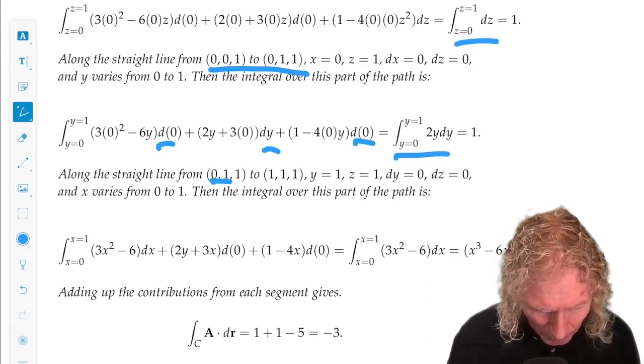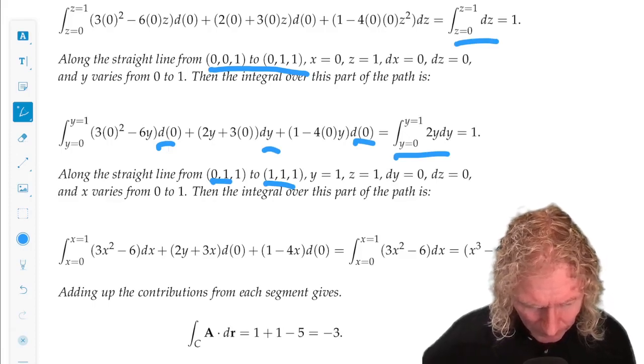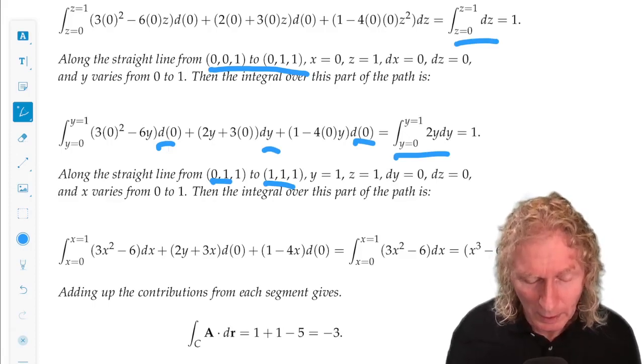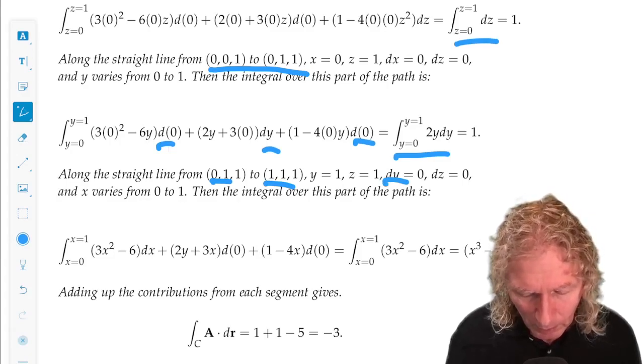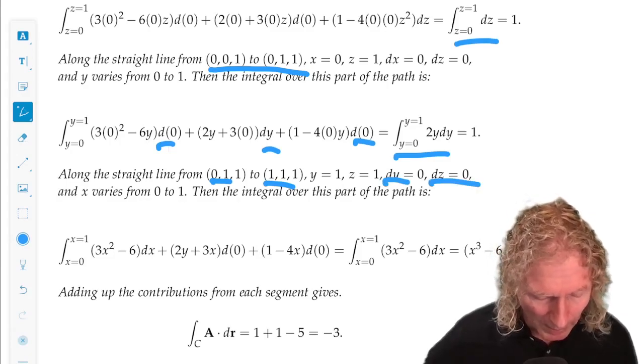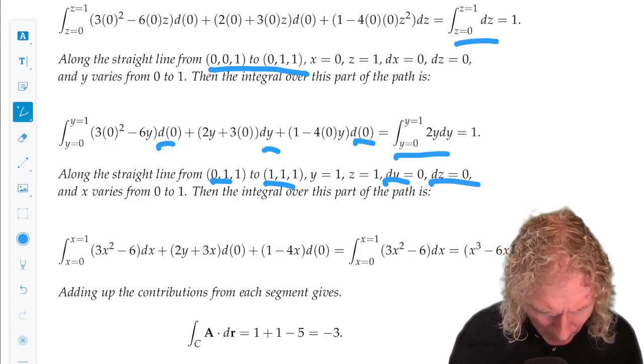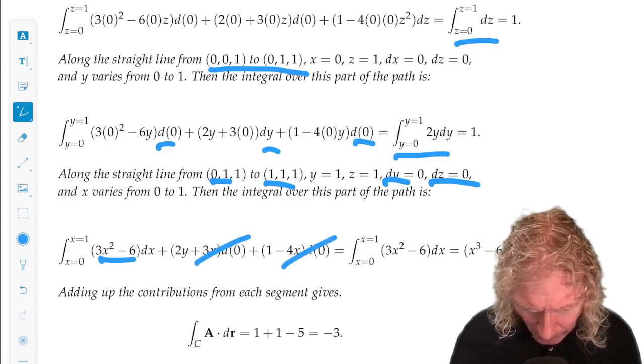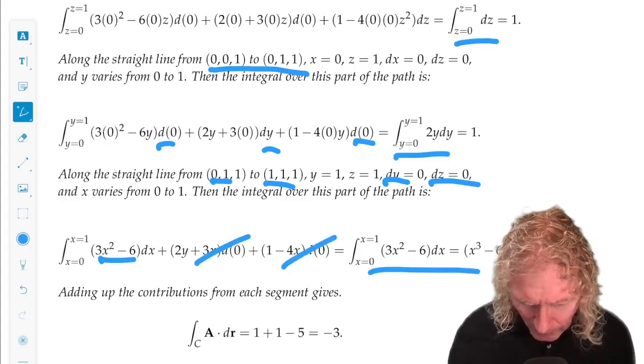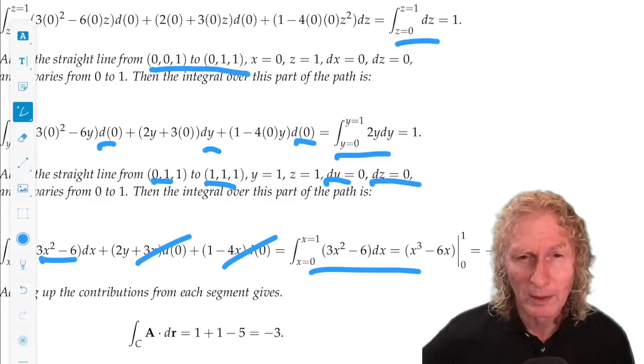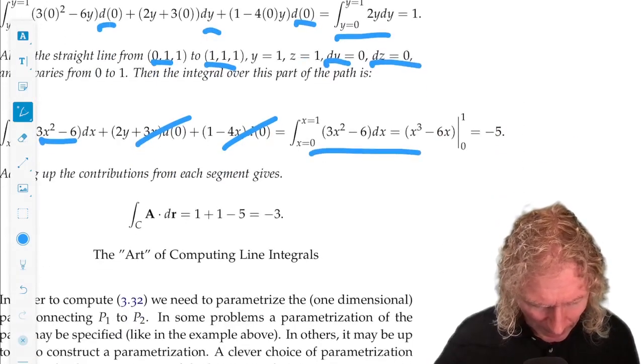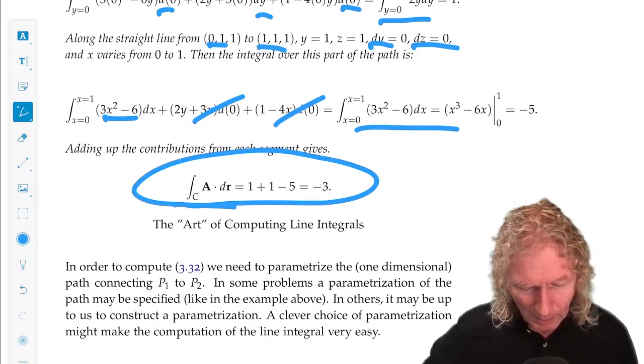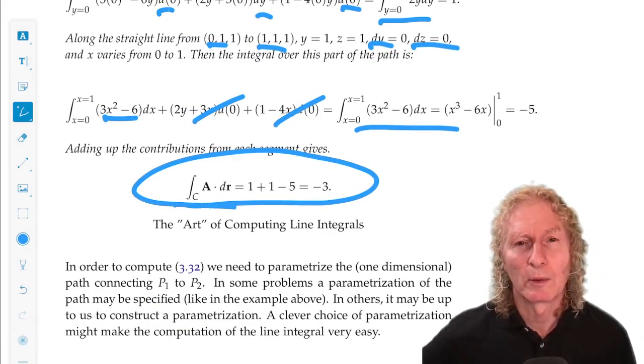dy is the only thing that's non-zero. And we have this left. And then finally, from 0, 1, 1 to 1, 1, 1. y doesn't change. And z doesn't change along this subpath. Only dx changes. And we're left with this. These are all very easy to do integrals. We add up the components on each path and we get the answer.